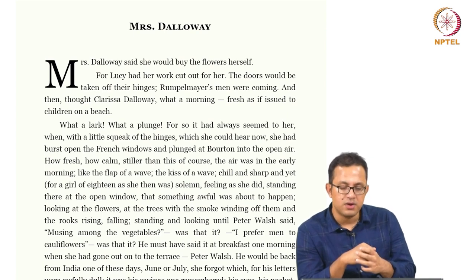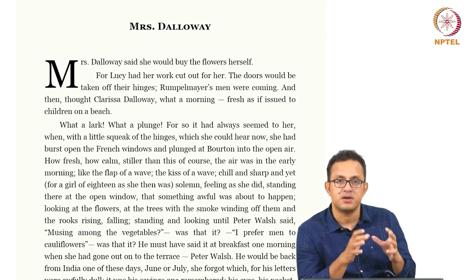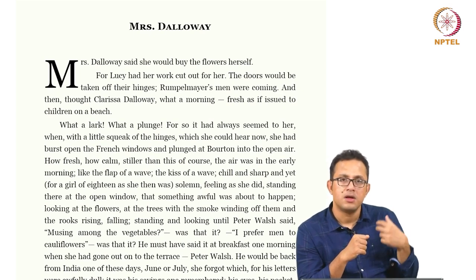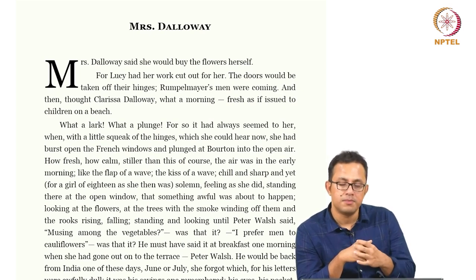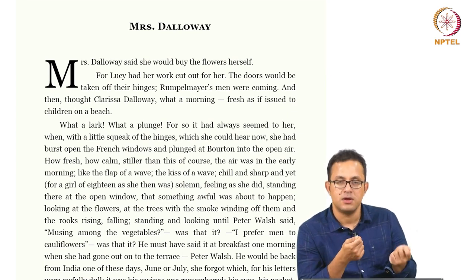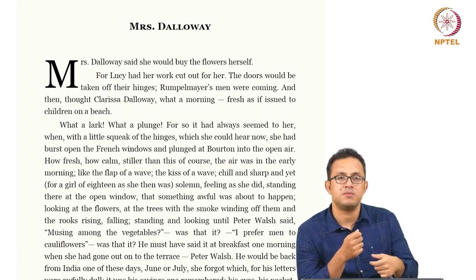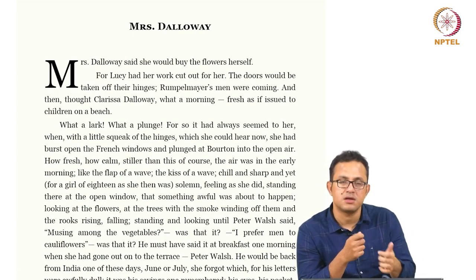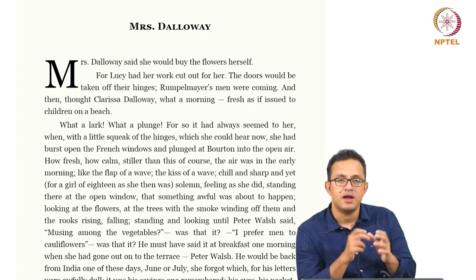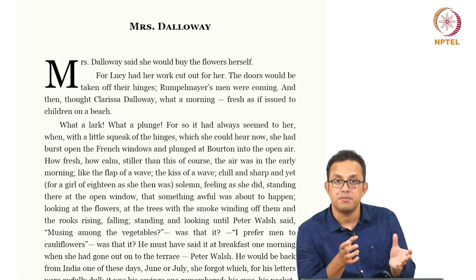So Septimus remains a very, very unaccommodated figure in Mrs. Dalloway. In other words, this novel is all about unaccommodation — the process of being out of sync with the system, of being incompatible: temporarily incompatible, spatially incompatible, culturally incompatible, and of course existentially incompatible.